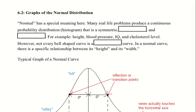Many real-life problems produce a continuous probability distribution—imagine a histogram divided into infinitely many pieces—that is symmetric, unimodal (has one peak), and bell-shaped. For example, height, blood pressure, IQ, and cholesterol level are known to be normally distributed.